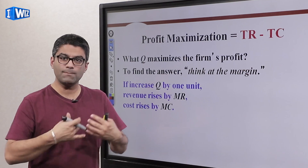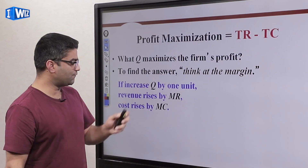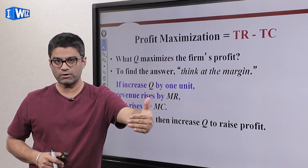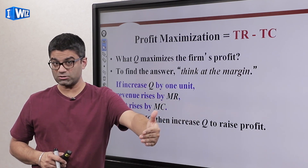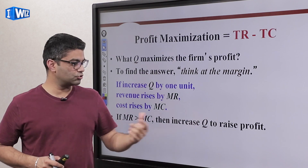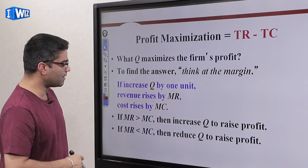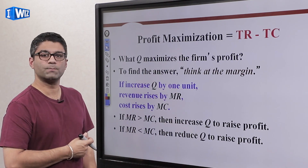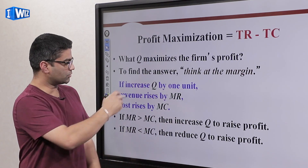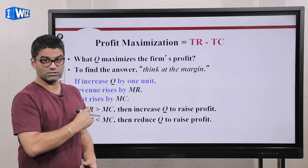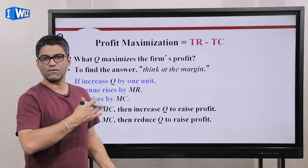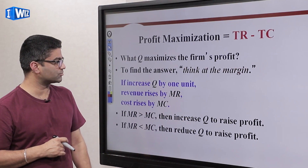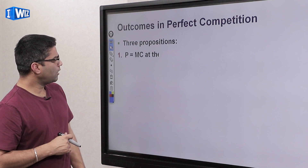When deciding whether to bake one more cake, if your MR is more than your MC — meaning the revenue you generate by selling it is more than the cost to produce it — you should definitely produce that unit. But if MR is less than MC, you should reduce the quantity to raise profits. This MR-MC relationship is true for every producer in any market.